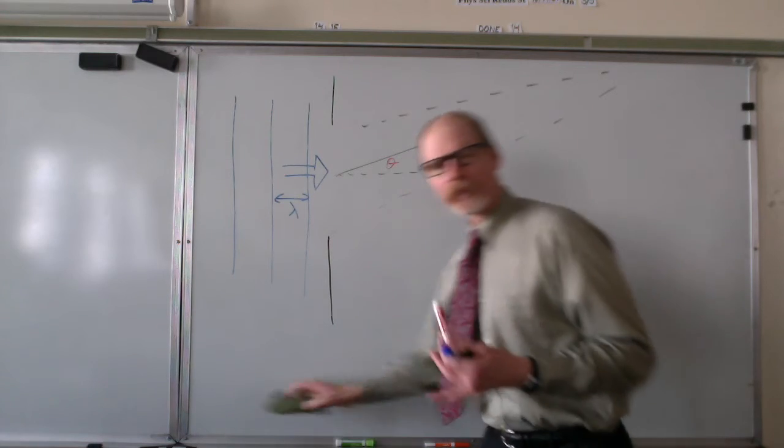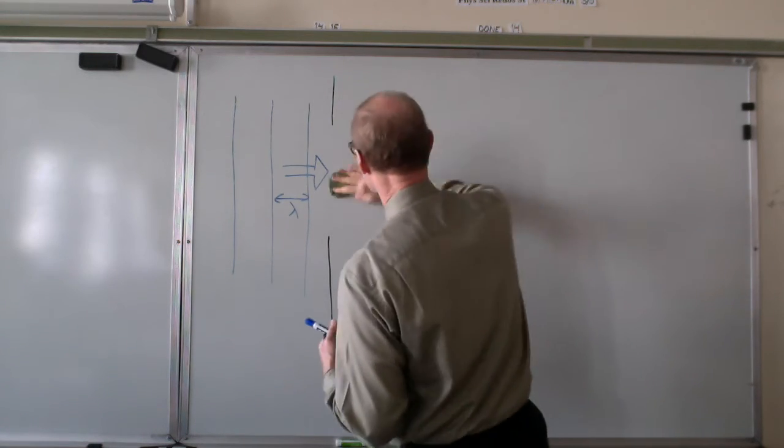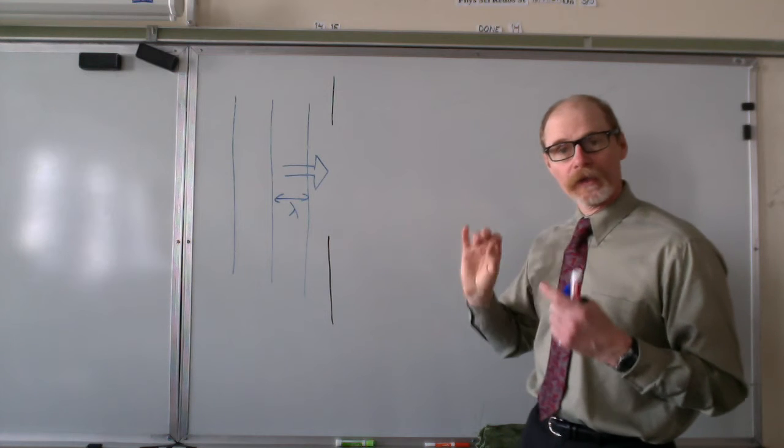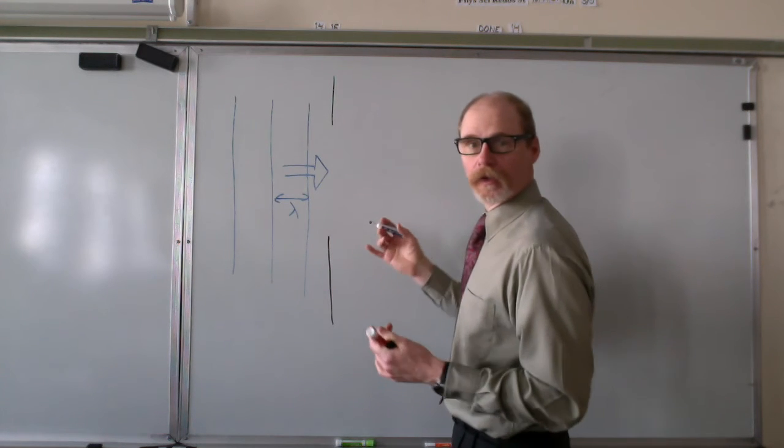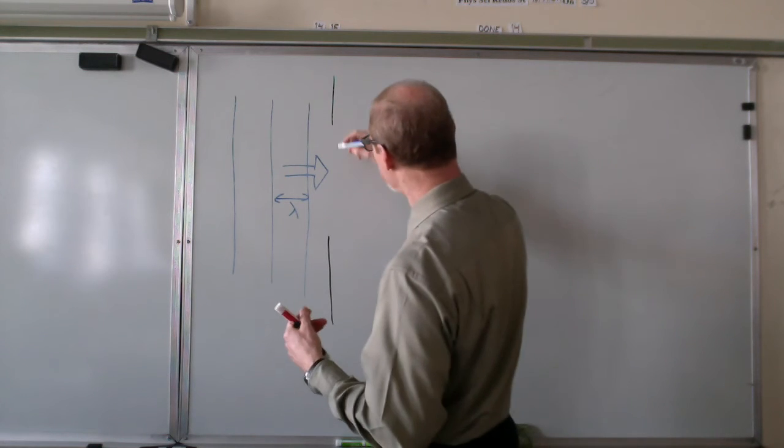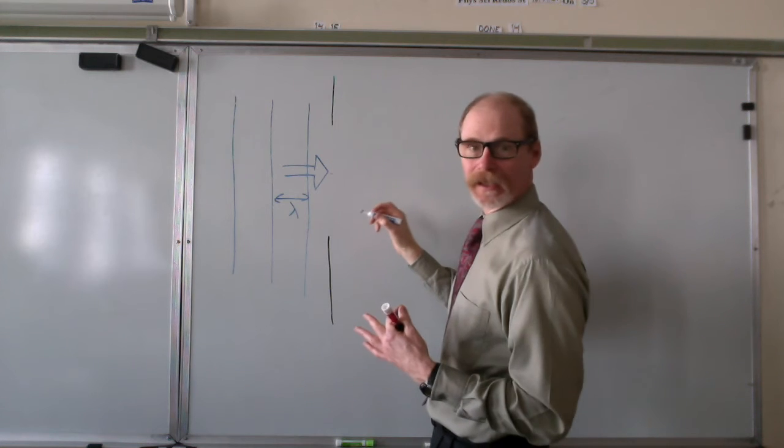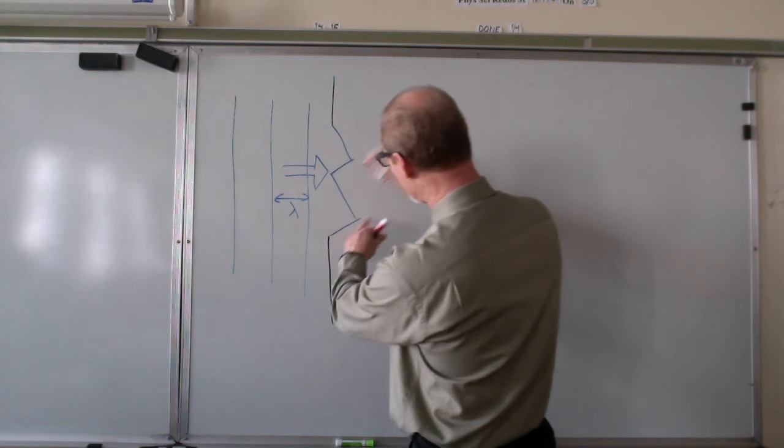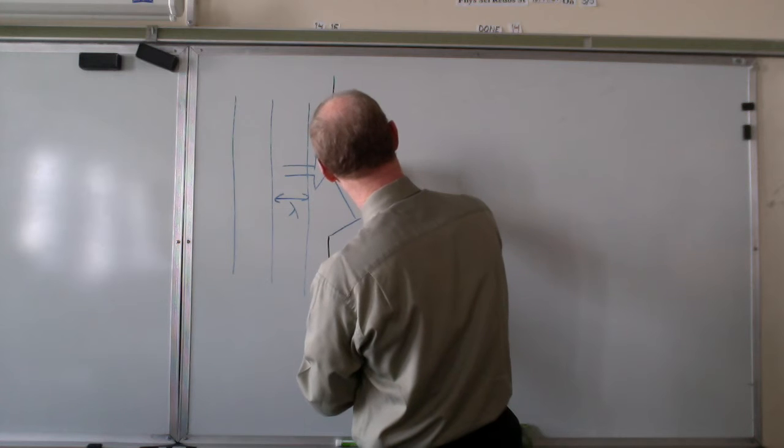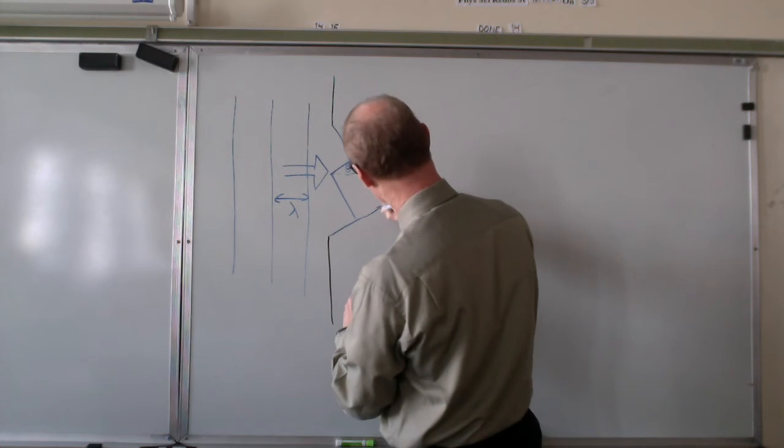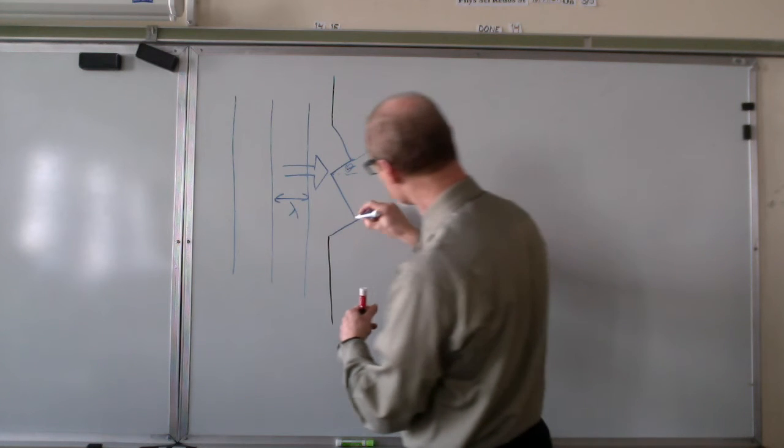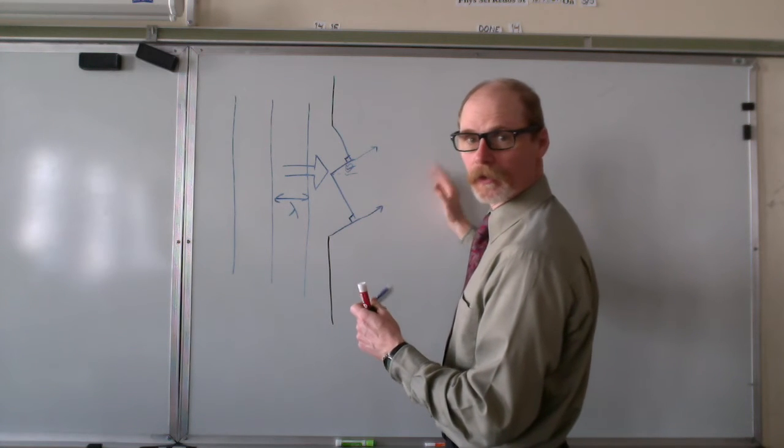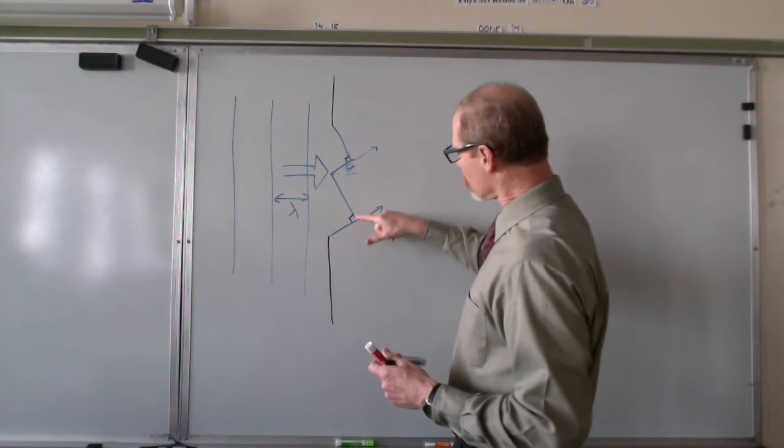Now how's that going to work? I'm going to erase this to clear things up. So we're going to get our first destructive interference, our first minimum, in this condition. Let's imagine that we have two parts of the slit. So I'll divide it in exactly half. And this angle theta here, as the waves are proceeding from the slit. And this will be the angle from the direct transmission, the angle of deviation from the direct transmission.